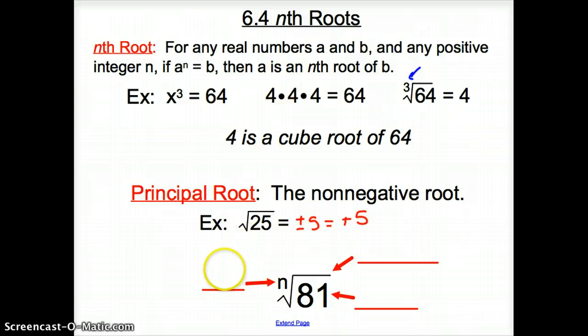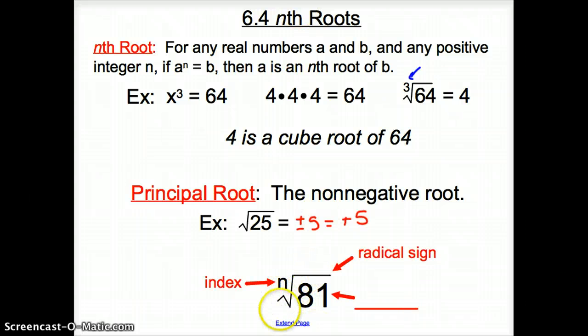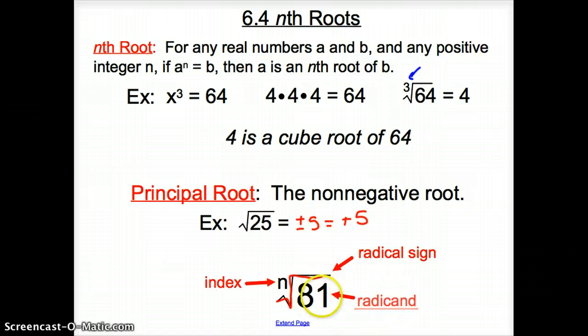Now, along with some more vocab words, we have some items here. This n, we would call that the index of the square root. Here is the radical sign. This square root sign is the radical sign. And then we have the radicand underneath the radical sign.